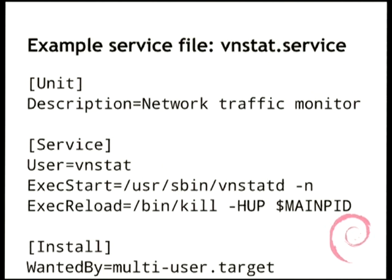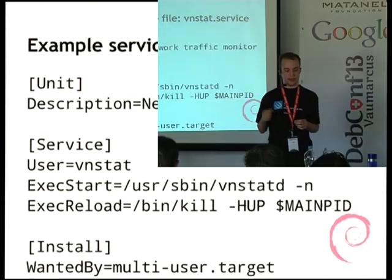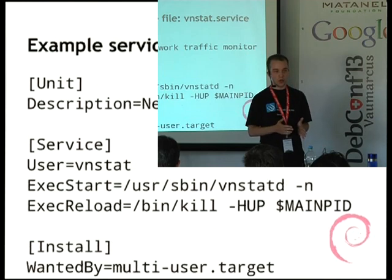Now let's look at an example service file. I picked vnstat.service, which is a tiny daemon that stores and plots your network traffic. It's a very clear human-readable configuration file. It starts with a unit section — just like .ini files or .desktop files, which have the same format. There are sections enclosed in square brackets, and key-value pairs separated by an equal sign. The first section is entirely just for humans — the description will tell you what kind of service this is.